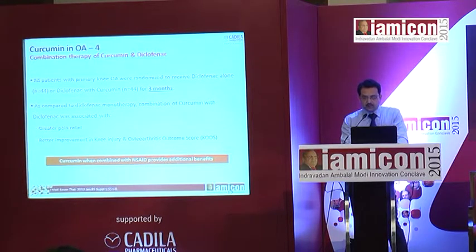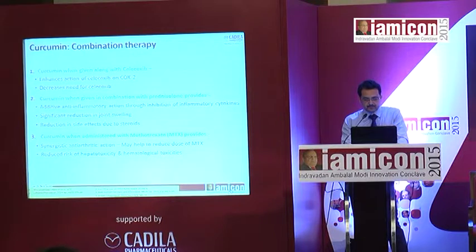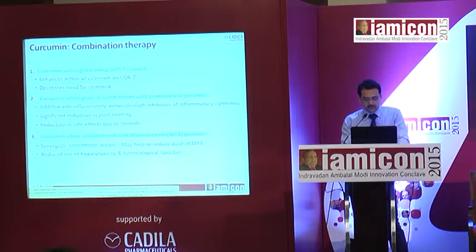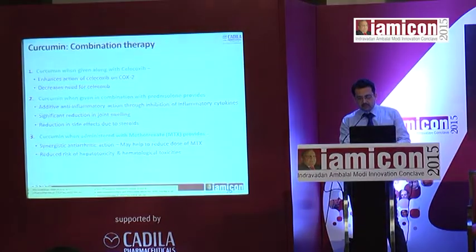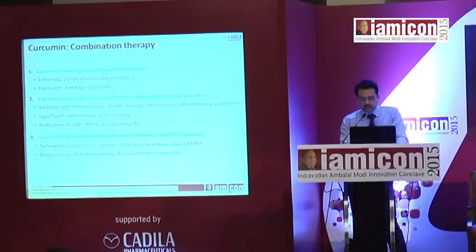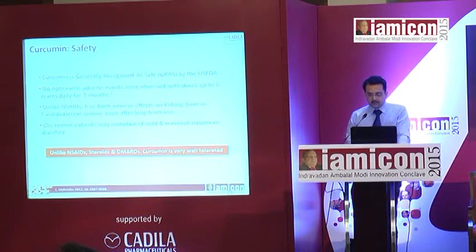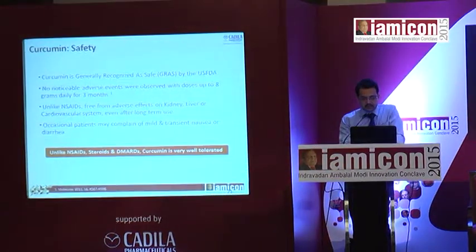Curcumin can be combined with diclofenac in very severe cases of arthritis, and has shown benefit in combination with NSAIDs. It can also be used alongside celecoxib and with steroids, acting in a synergistic way. It can be combined with DMARDs like methotrexate, reducing the required dose and reducing the commonest side effects such as hepatotoxicity and hematotoxicity. Unlike other NSAIDs, steroids, and DMARDs, it is well tolerated and has fewer side effects.